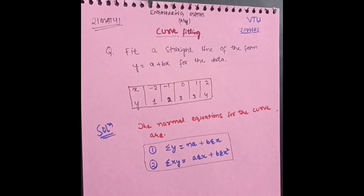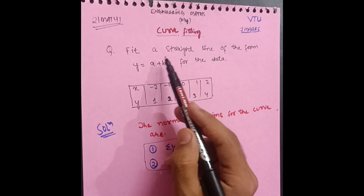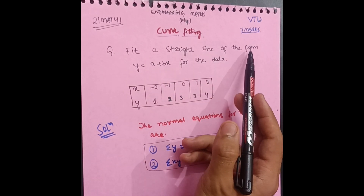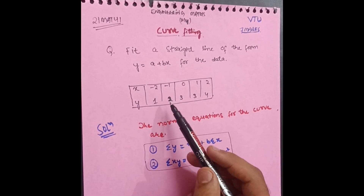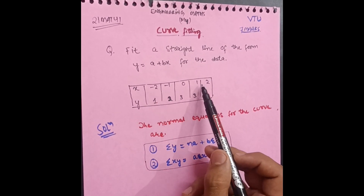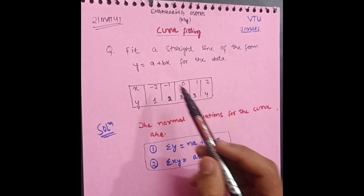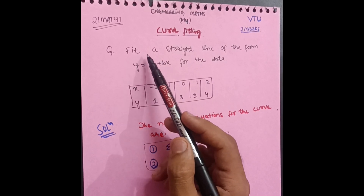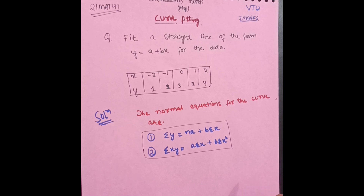Hello everyone, welcome back. Today I will discuss curve fitting, covering the most important question as far as the exam is concerned. The question is: fit a straight line of the form y = a + bx for the given data, where x = -2, -1, 0, 1, 2 and y = 1, 2, 3, 3, 4. So you have to fit a straight line y = a + bx.